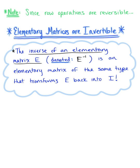In other words, if E is produced by a row operation on the identity matrix, then there must exist another row operation of the same type that changes E back into the identity matrix.